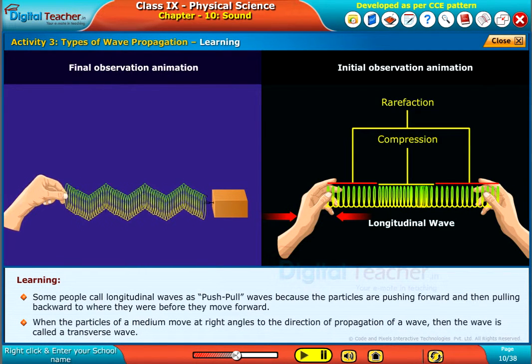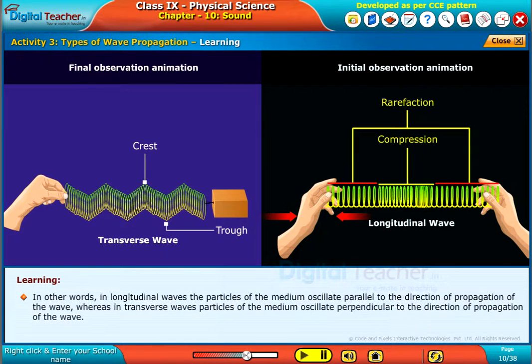When the particles of a medium move at right angles to the direction of propagation of a wave, then the wave is called a transverse wave. In other words, in longitudinal waves, the particles of the medium oscillate parallel to the direction of propagation of the wave, whereas in transverse wave particles of the medium oscillate perpendicular to the direction of propagation of the wave.